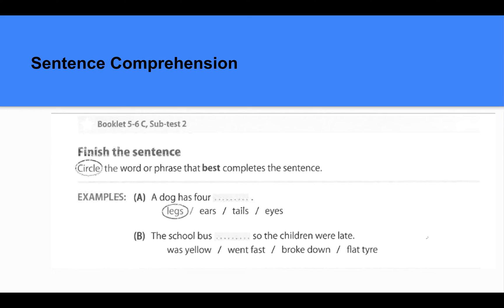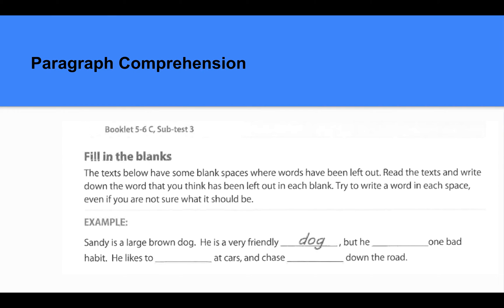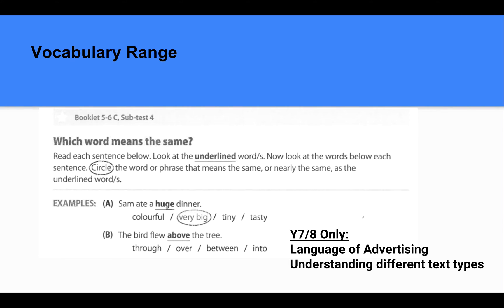Paragraph comprehension and vocabulary range. Our Year 7-8 students also look at the language of advertising and understanding the use of different text types.